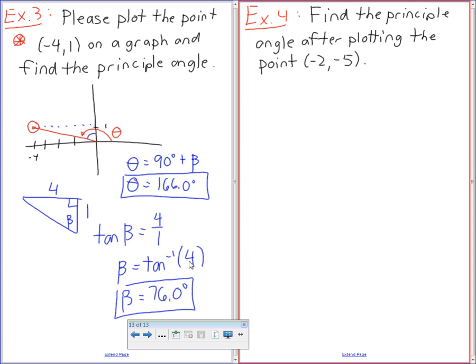So again, this is just a rough little sketch here. So negative 2, negative 5, it's going to be like this.